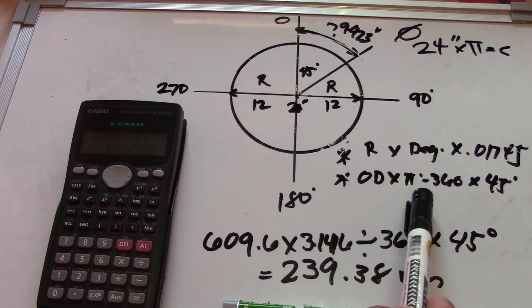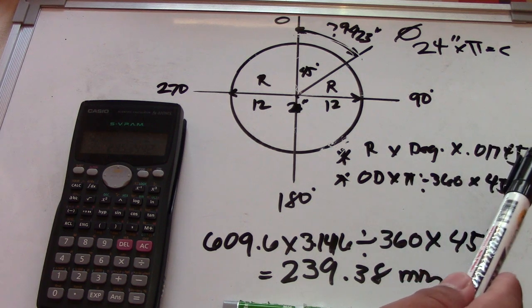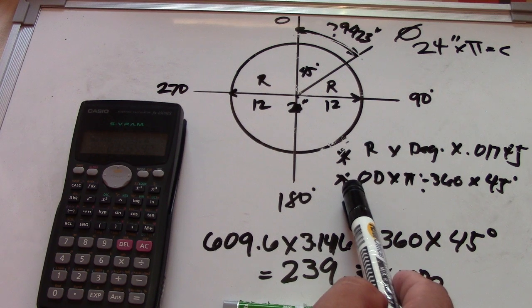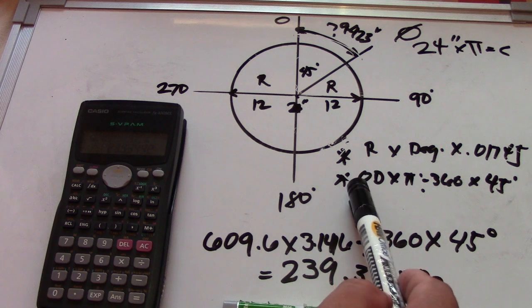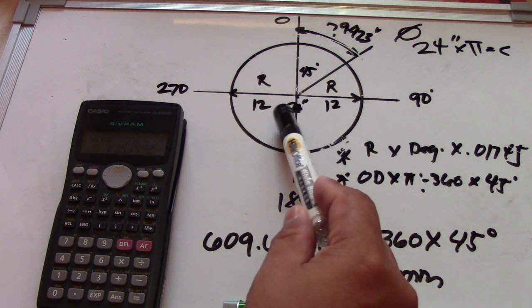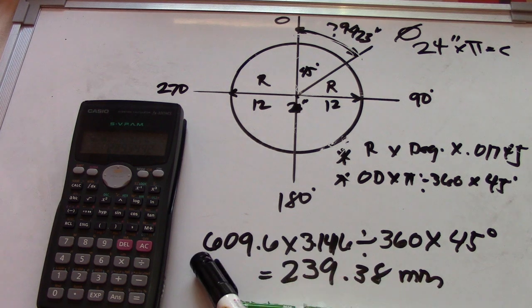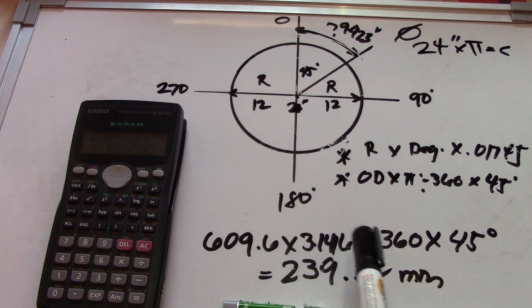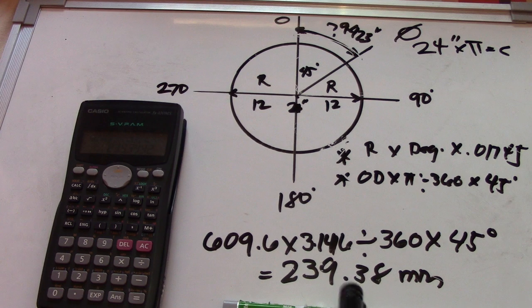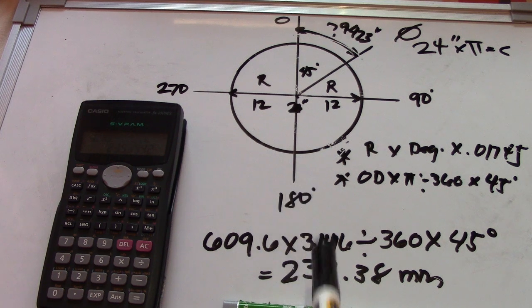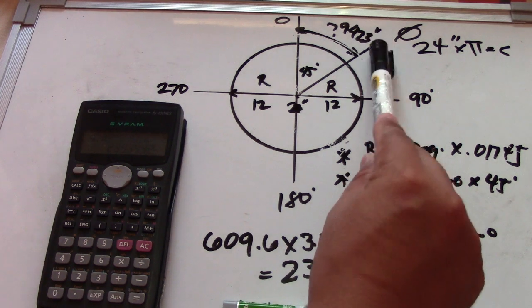Formula 2: outside diameter times pi divided by 360, times 45 degrees. Convert 24 inches to millimeters: 24 times 25.4 equals 609.6 mm. Then 609.6 times 3.1416 divided by 360 times 45 equals 239.3 mm. Both formulas give the same answer — 239.3 mm and 9.423 inches.